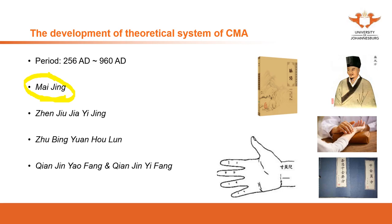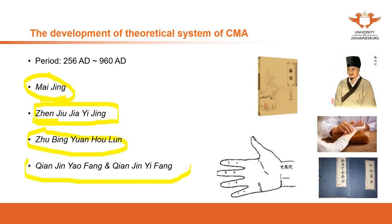The Mai Jing focuses on pulse diagnosis and was used as a textbook for acupuncture training — our current books are also based on it. Additionally, there were important works on the causes of different diseases, pathogenesis, and pathogens. These are all considered milestones during this period.